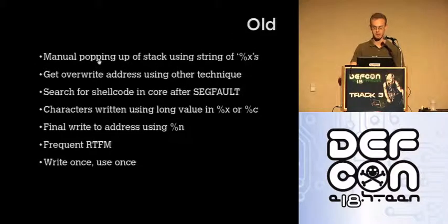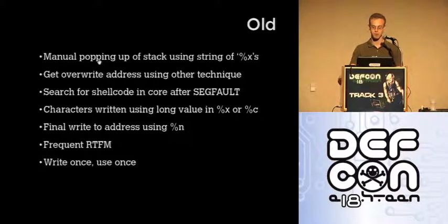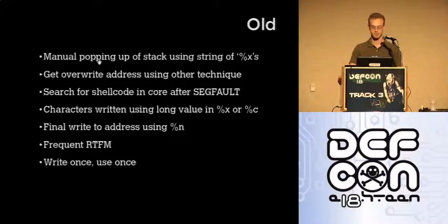The old technique used to be really kind of a pain to create. It required a long string of manual popping using percent X, percent P, in order to sort of get to your interesting data on the stack. Often when you want to actually create the exploit, you have to use a variety of other tools — look for shellcode in your core after a seg fault. It's a lot of having to read the manual, consult the document. And then once you wrote it for one program, you couldn't take that work and bring it anywhere else.